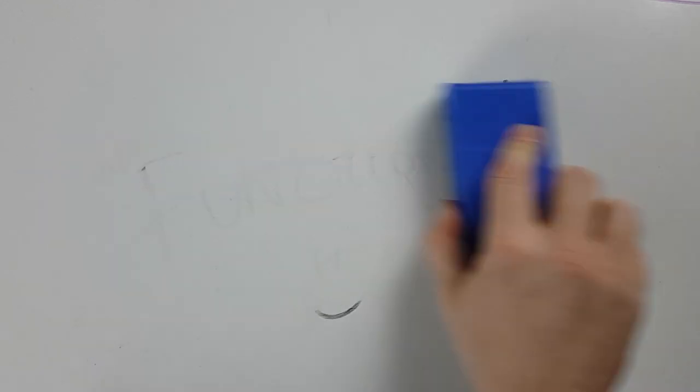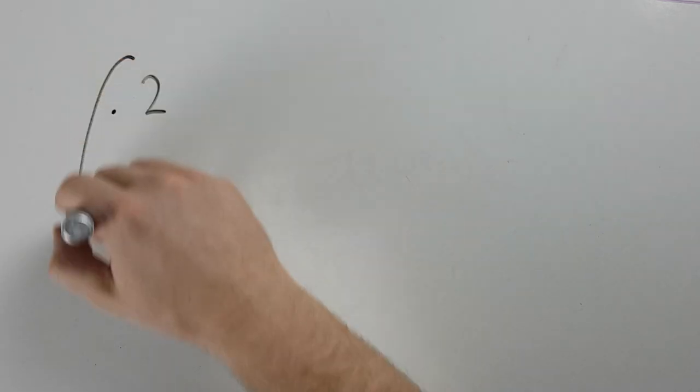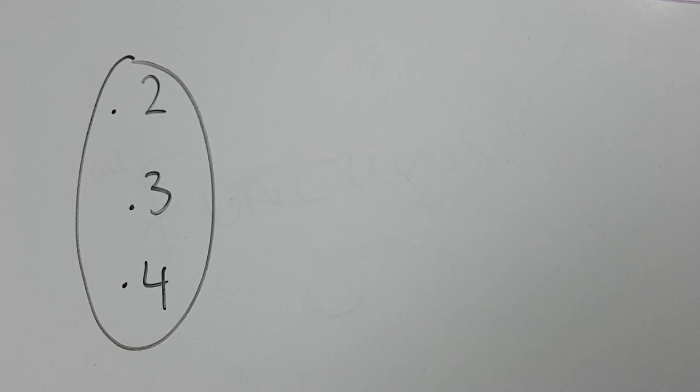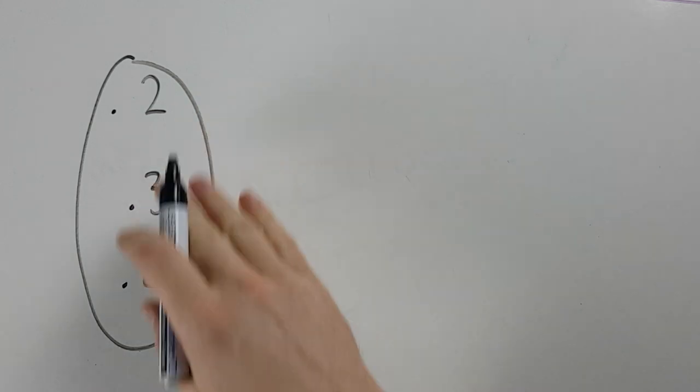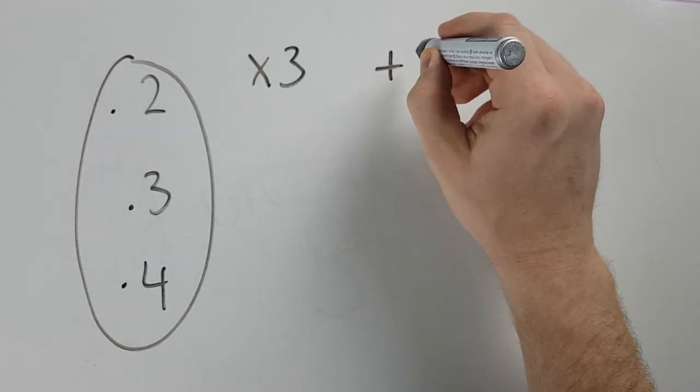So first, what I want you to do is just take a number and put it in your head. Let's say a number between 1 and 5, so you've got 2, 3, or 4. You're going to take that number, and I want you to multiply whatever that number is by 3. Then after you've done that, I'd like you to add 2.